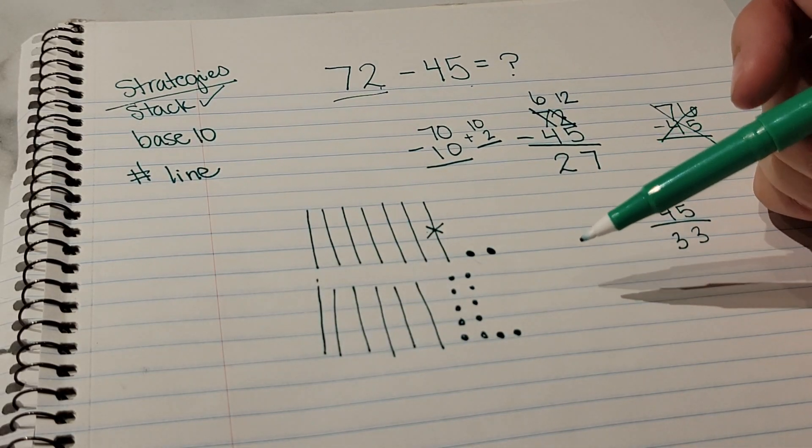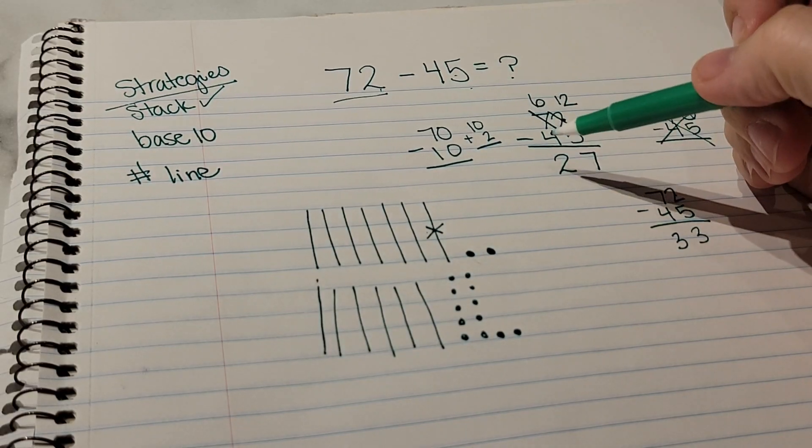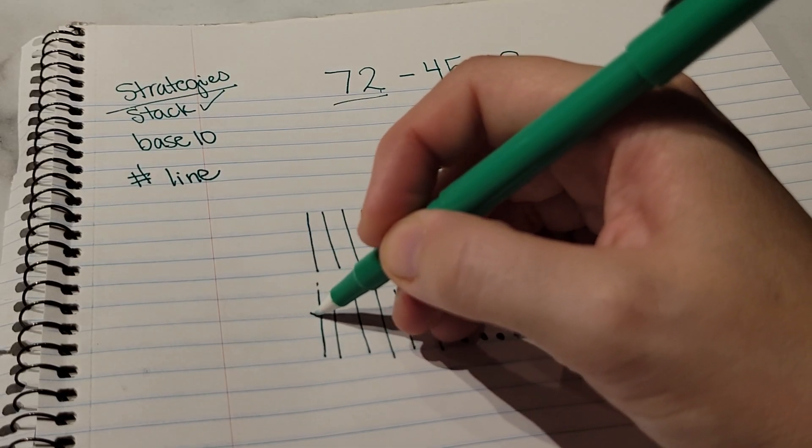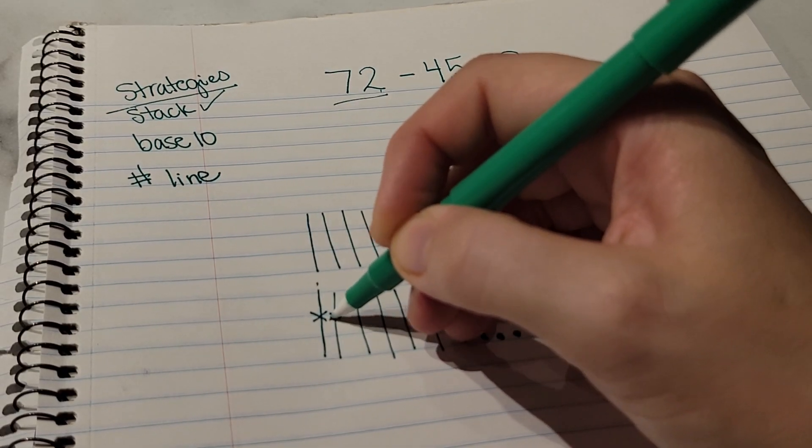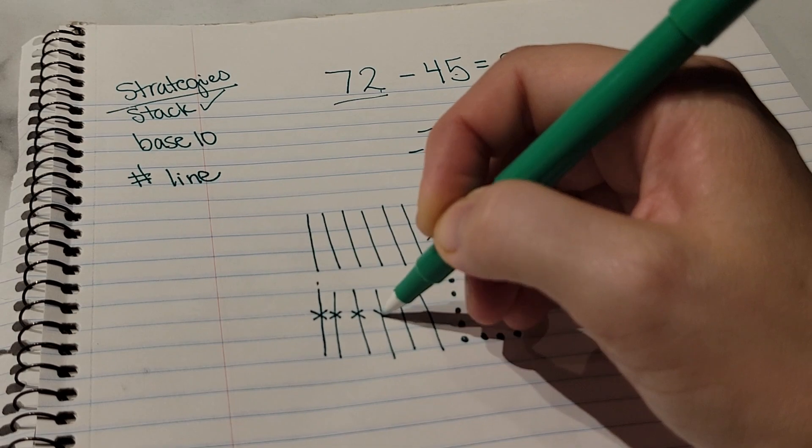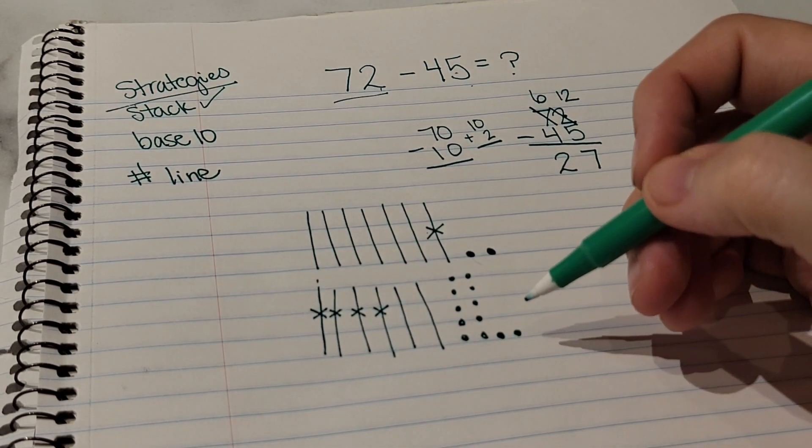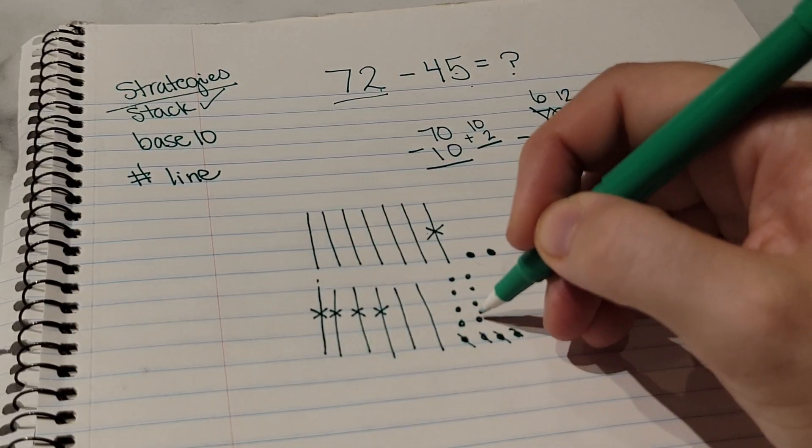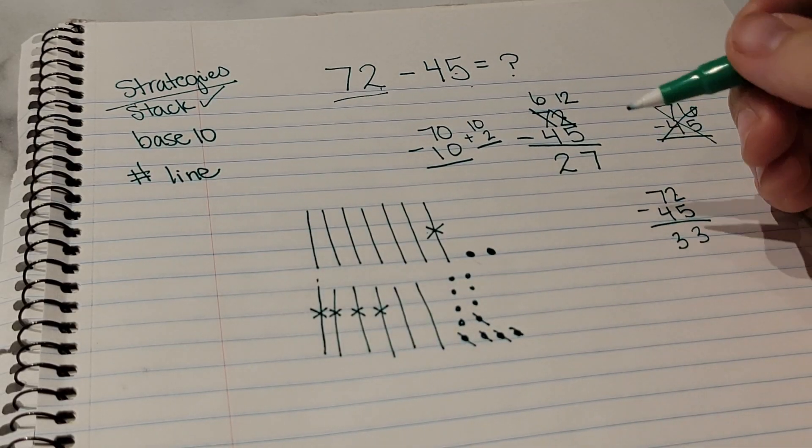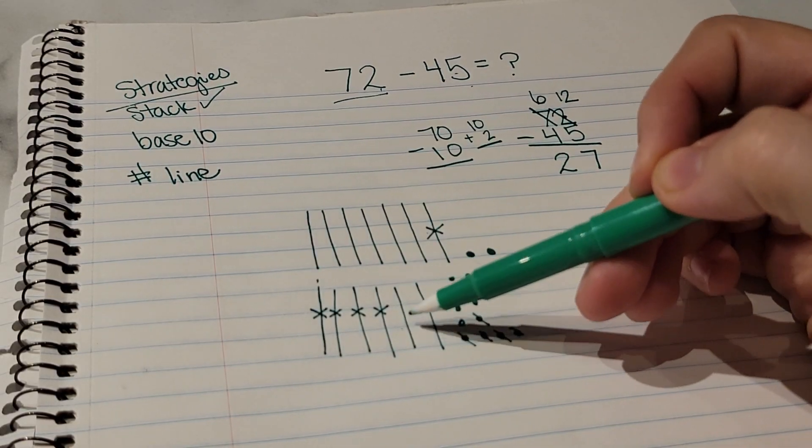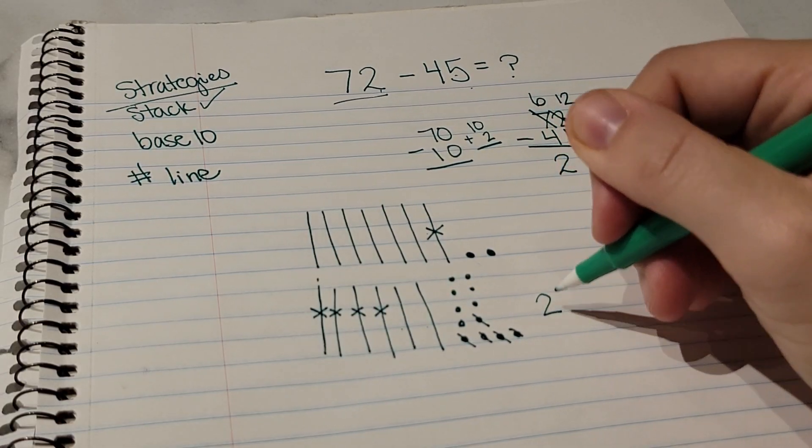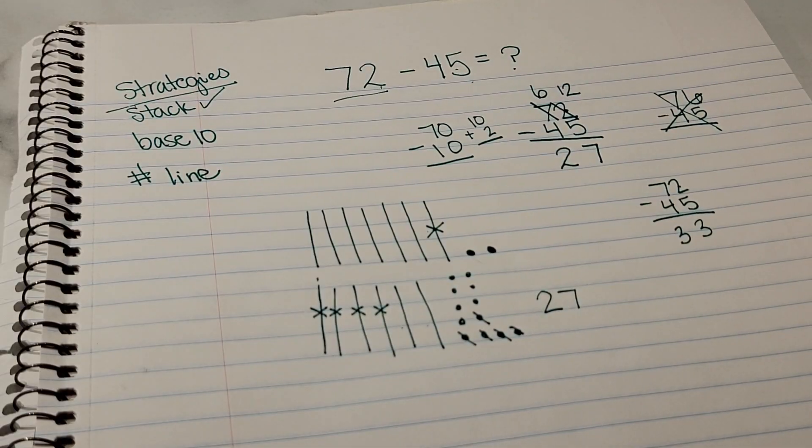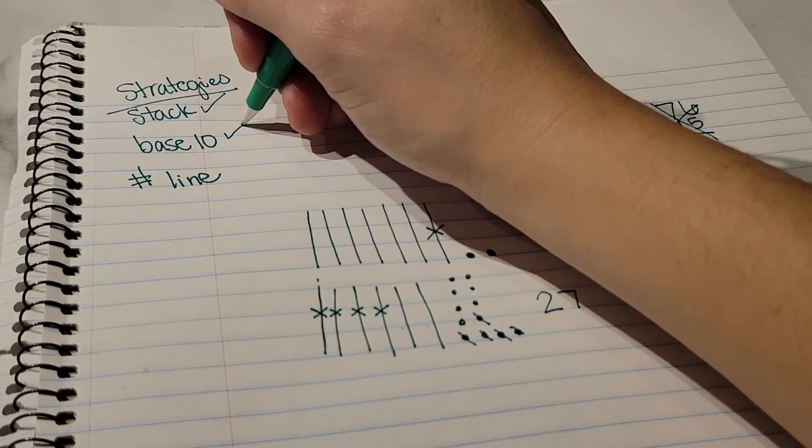And then always remember your extra ones from your first picture. Now I still have the number 72, it's just broken up differently. Then from there I can take my number and subtract 45. So I can take 4 tens away: 10, 20, 30, 40. And then I can take 5 ones away: 1, 2, 3, 4, 5. And then I can see my answer will be 2 tens and 7 ones, 27.